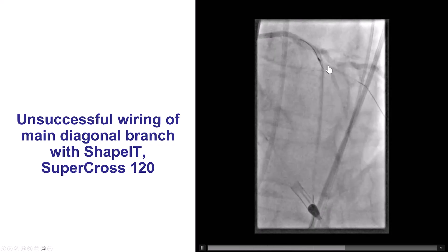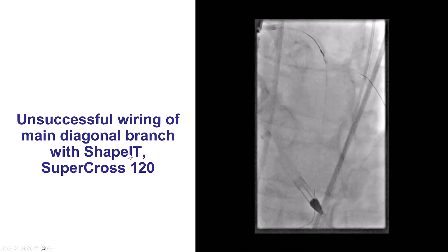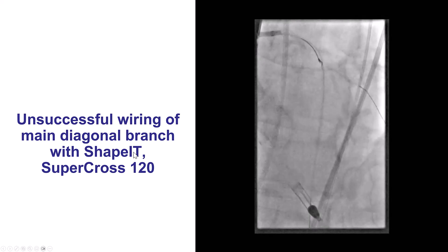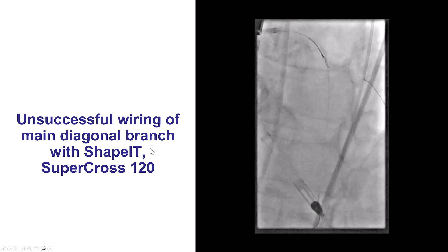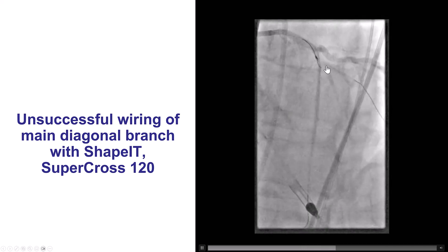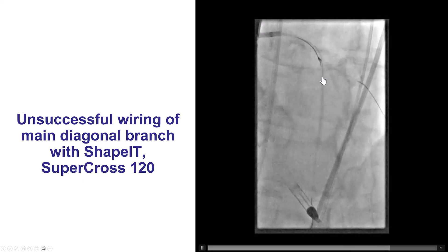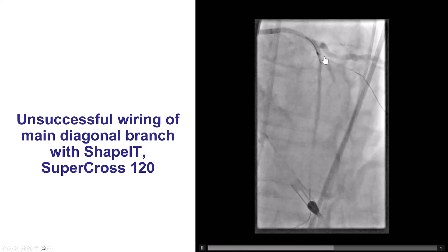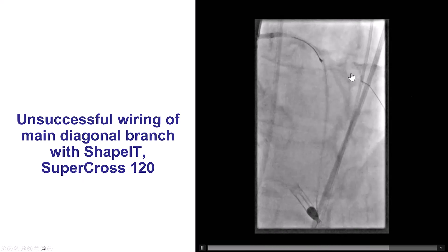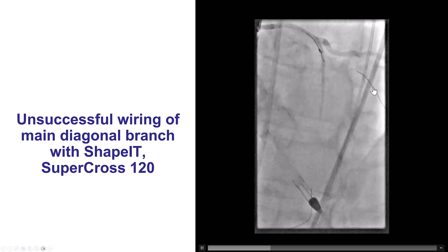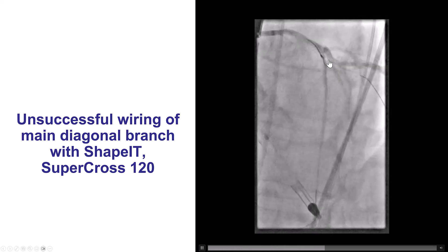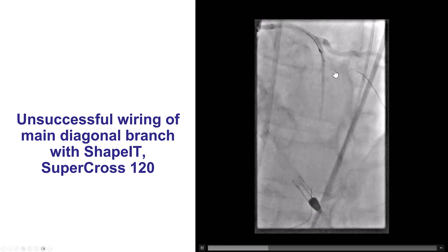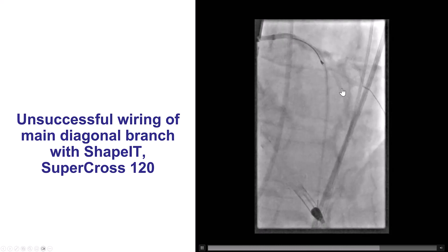We initially tried with different techniques. We tried with an angulated microcatheter, the Shapit from IMDS, as well as the Supercross 120, but every time we did this, the wire kept on going into the superior branch. We have a wire in the superior branch, but we are unable to get a wire into that more inferior branch of the diagonal.